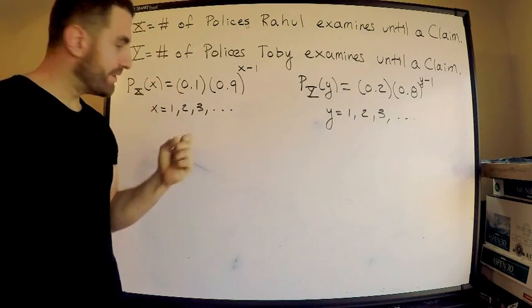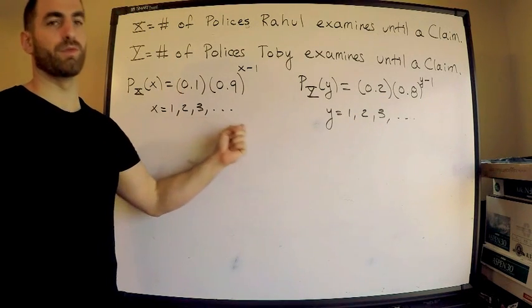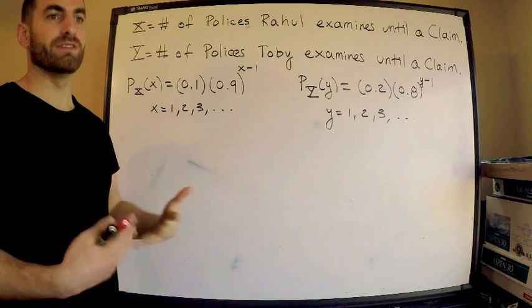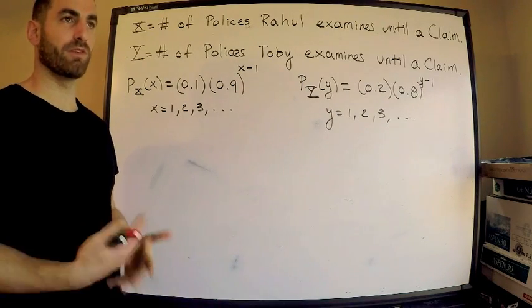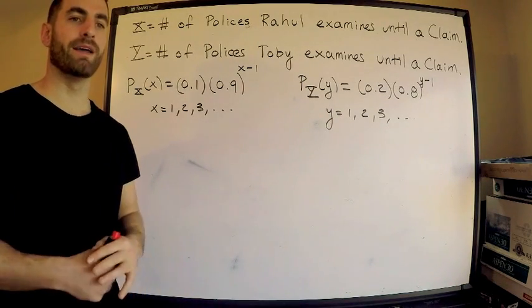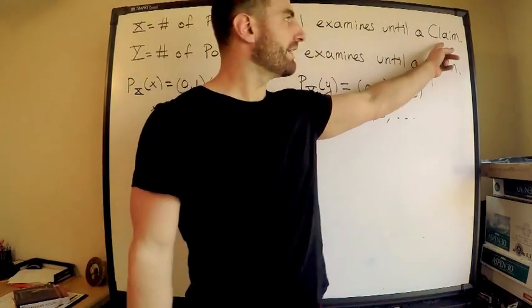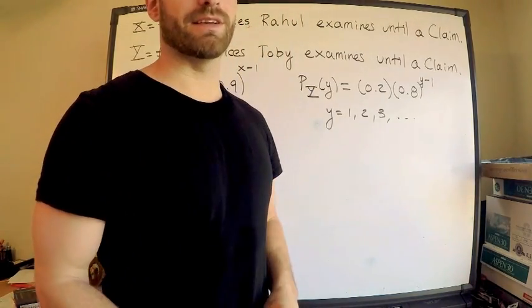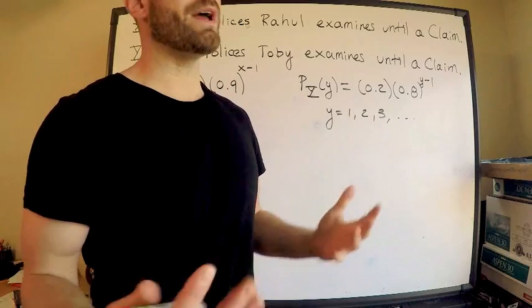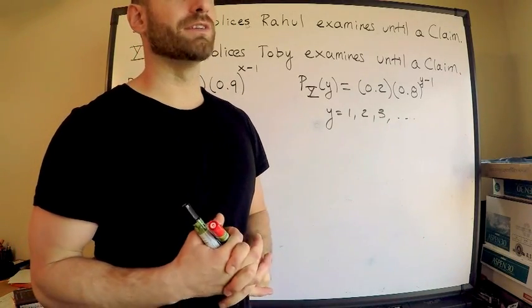You have to ask yourself which one should this be. I claim that this is the number of trials because we're examining policies. We're not examining zero. If we're looking for the number of failures until the first success, we start our random variable at 0, but we're examining policies, so we start at one. That's one way to see why there's the number of trials until the first success - until the first claim. The claim is my success.